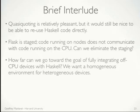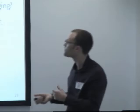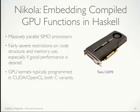As a brief interlude before Nikola: the quasi-quoting was nice for running code on the nodes, but ideally I'd run Haskell code directly without changing my code at all. Flask is staged — I run the program, generate some code, push to the node — but I'd really like to run these things simultaneously, with my Haskell code interacting with the device in real time. The question is how far can we go towards fully integrating these off-CPU devices with Haskell — I want a homogeneous programming environment as close as I can get for a heterogeneous system.